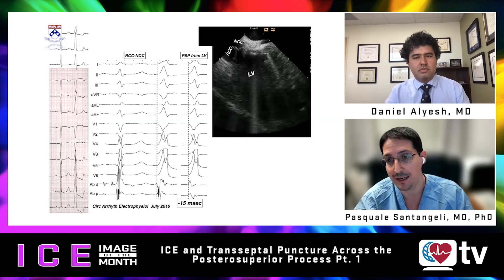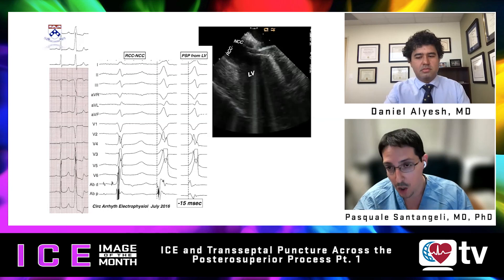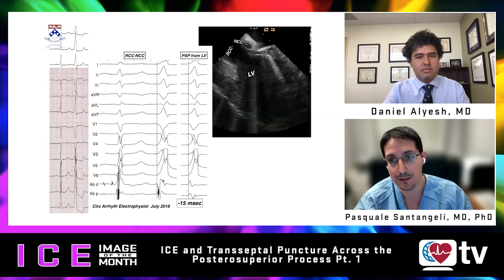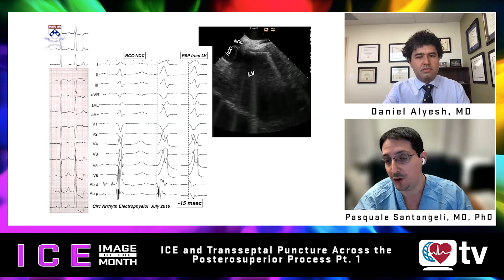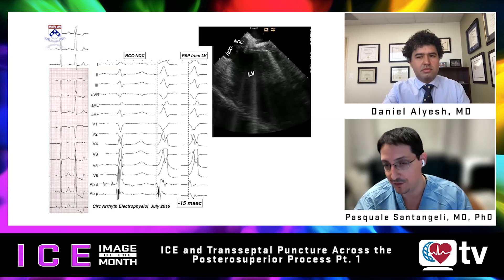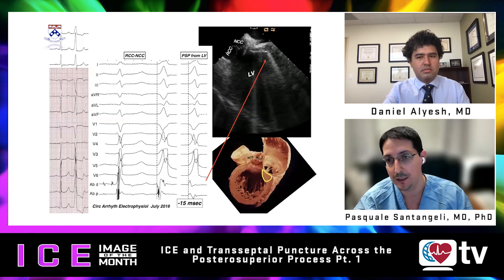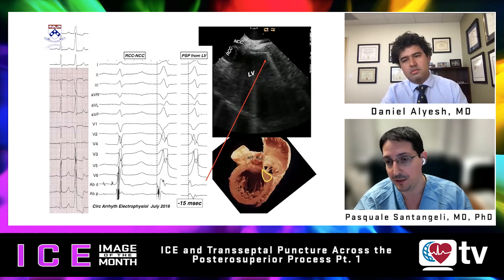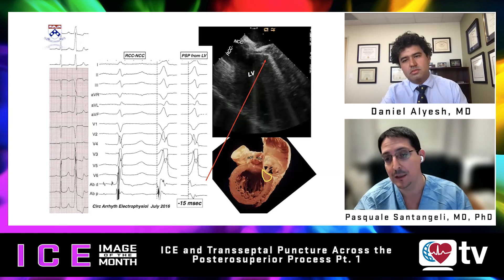The idea was to position the catheter on the opposite side — in the right atrium — and try to record a signal from there and potentially ablate from that area. This was successful in this case, and we published a series of about six cases with these specific morphologies that were ablated from the right atrium.